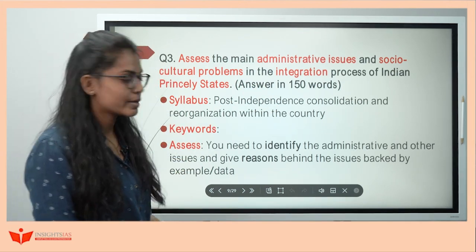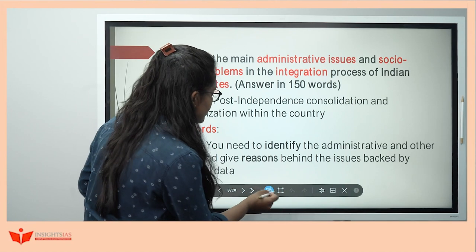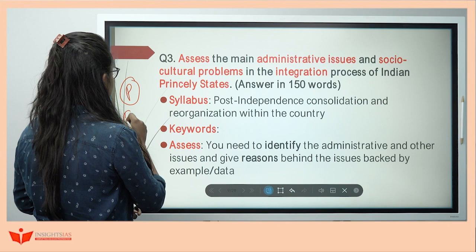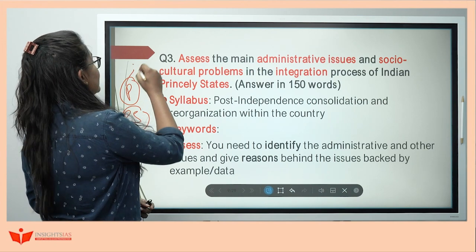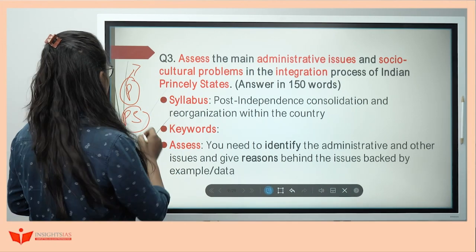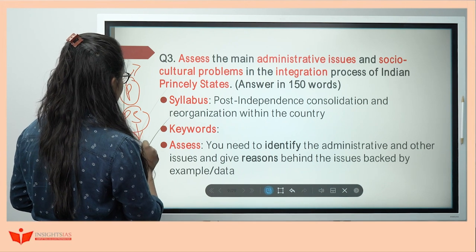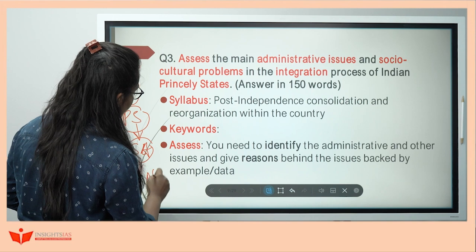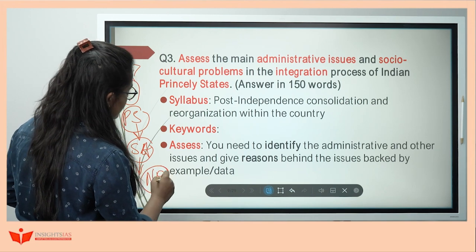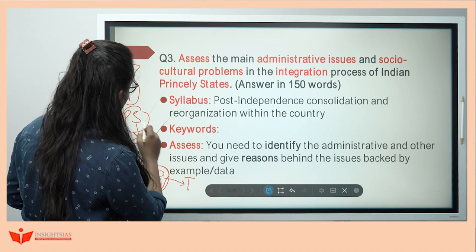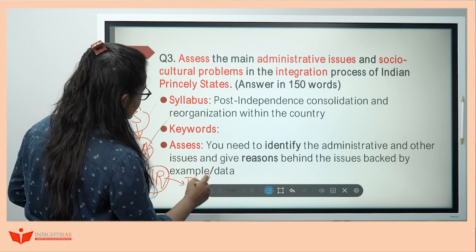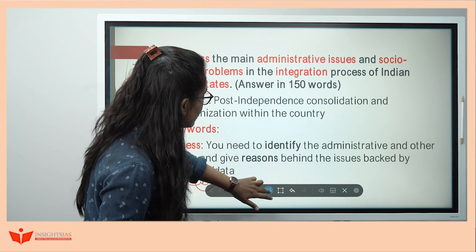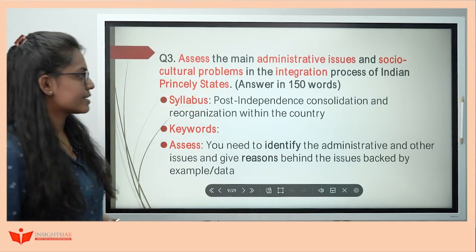Let's understand what princely states were. Under the British, there were two main regions: provinces and princely states. Provinces were directly under British rule. Princely states were regions ruled by native rulers only under a subsidiary alliance arrangement, but these native rulers paid taxes to the British and so indirectly came under the British Crown. Those were the princely states.